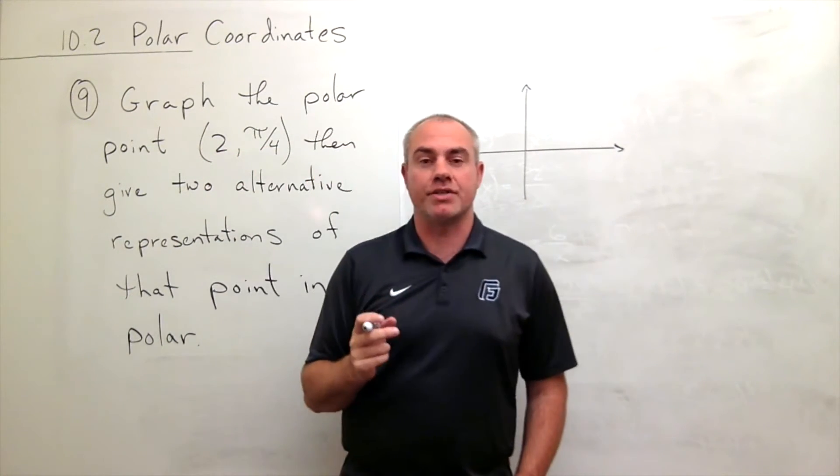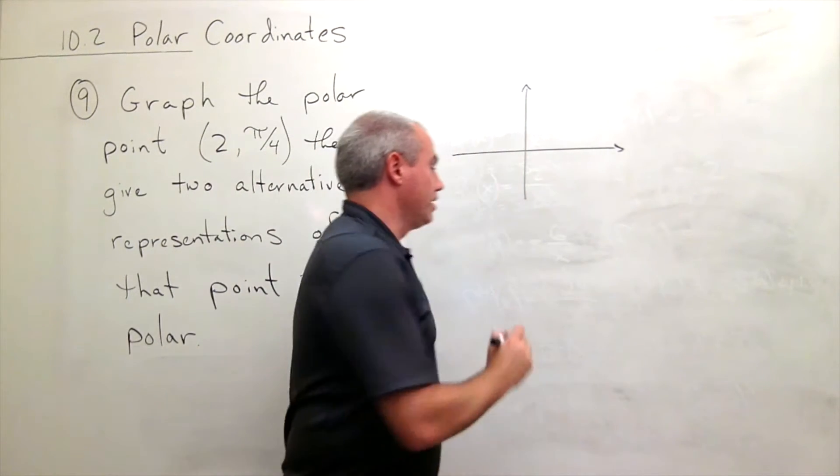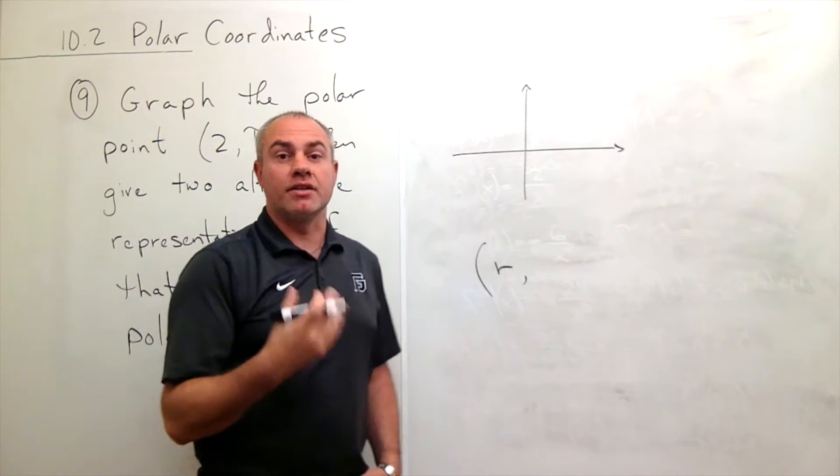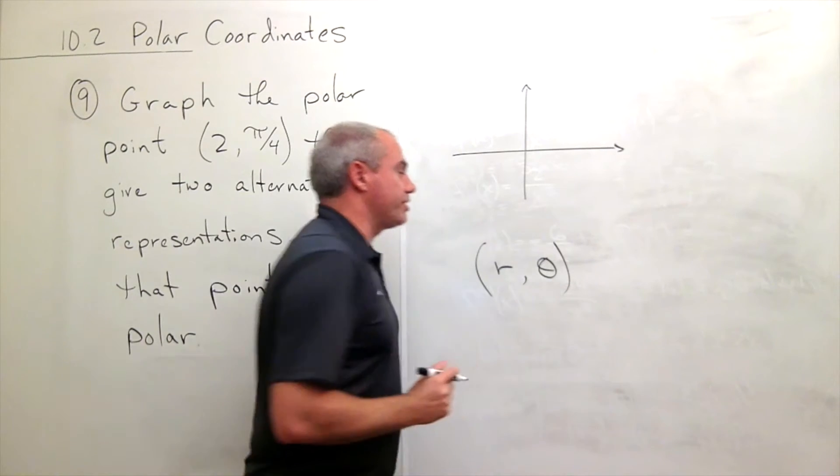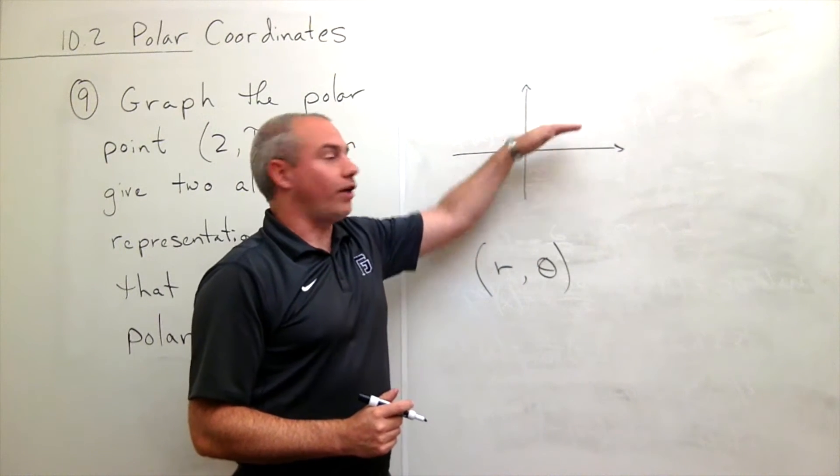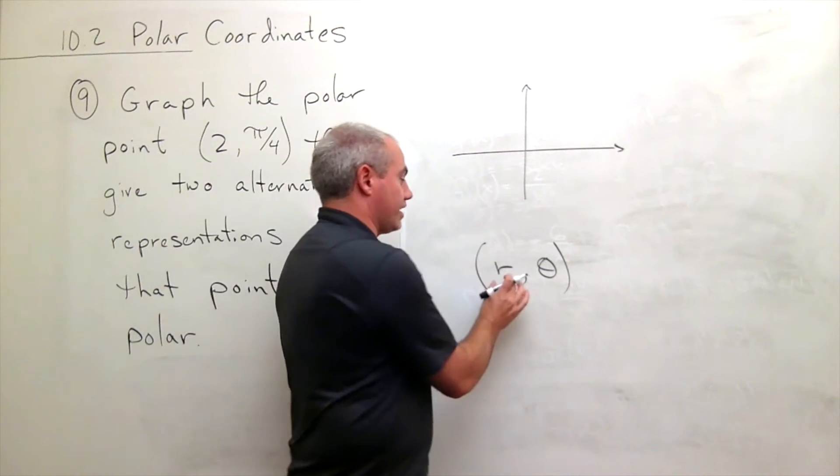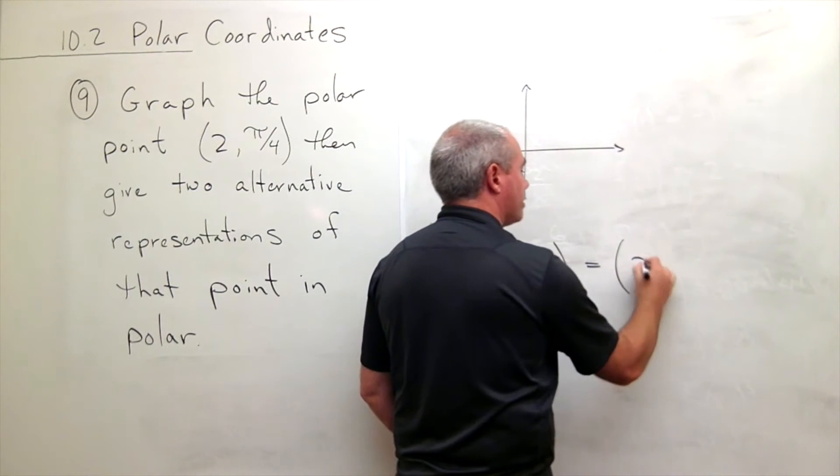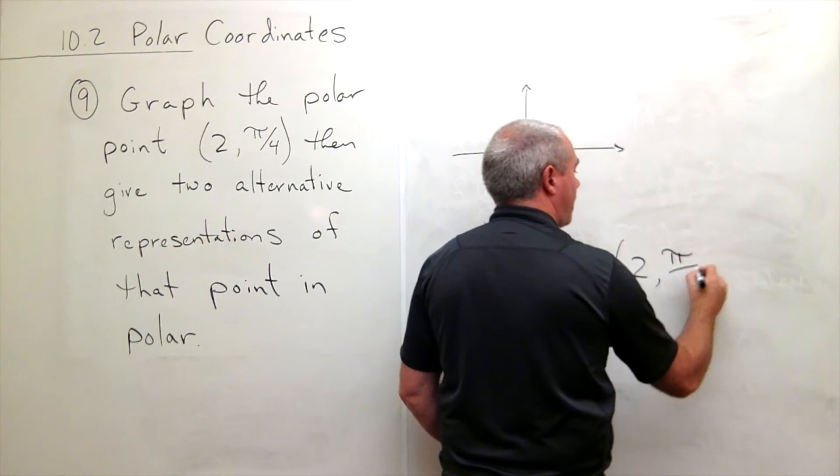Now polar points are given in the form (r, θ). So typically we have r which represents the distance from the origin and θ which represents the angle off of the positive x-axis. That's what I mean by r and θ, and in this case my r is 2 and my θ is π/4.